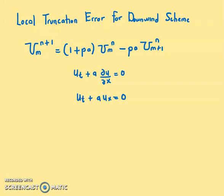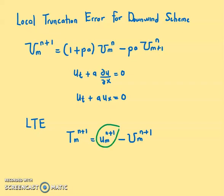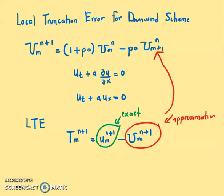Now we want to find the local truncation error for this scheme. The LTE is given by T(m, n+1) equals U(m, n+1) minus the numerical approximation U_hat(m, n+1), where the first term is the exact solution and the second is the approximation — in our case, the downwind scheme.